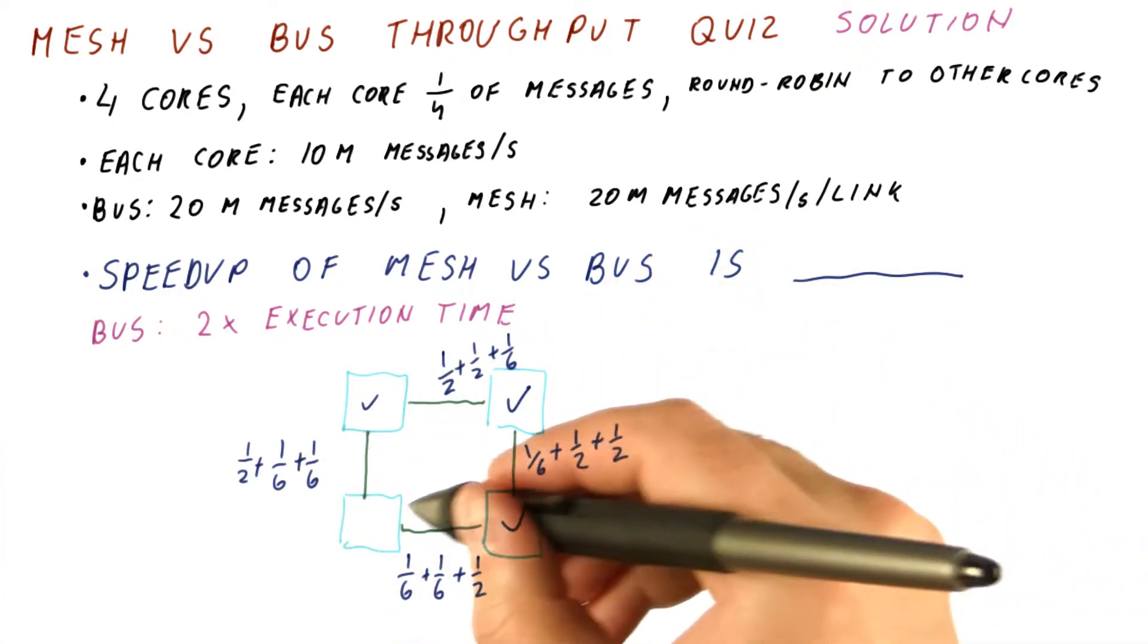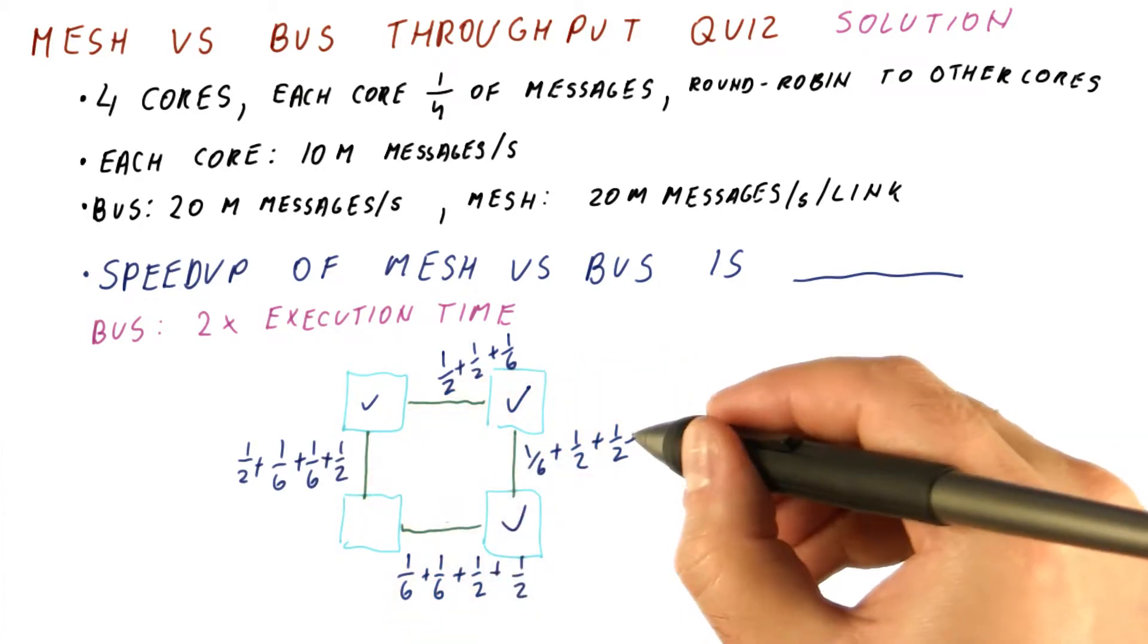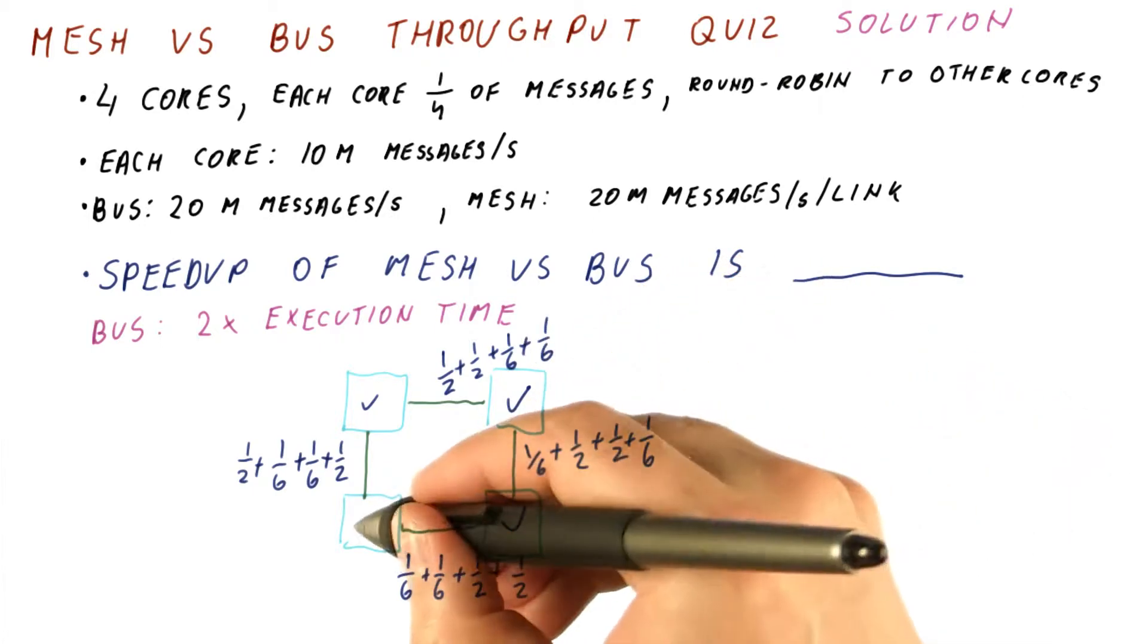Done with this core. And finally, this core sends messages half here, half here. And then one sixth here, and one sixth here. Now we're done with this core.